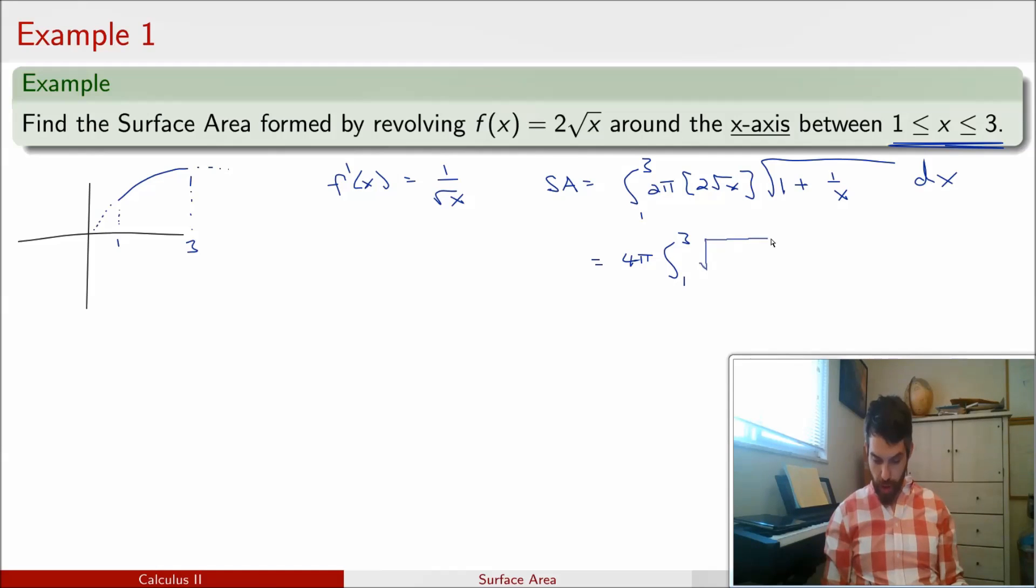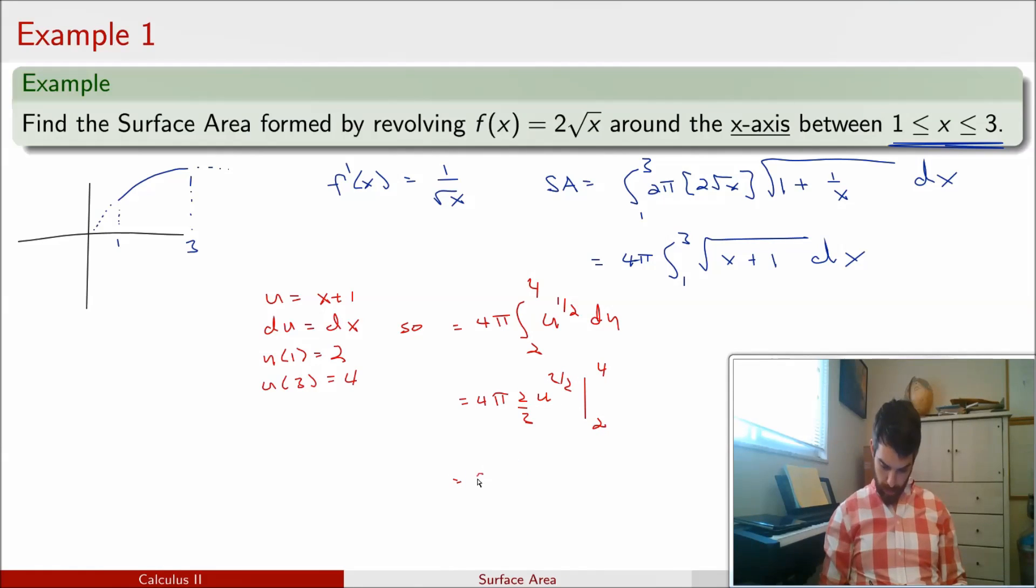I'm going to say that this is the square root of, bringing the square root of x inside, it's going to have an x, and then it's going to be an x over x, so just an x plus 1 dx. And now this is just a simple u-substitution.